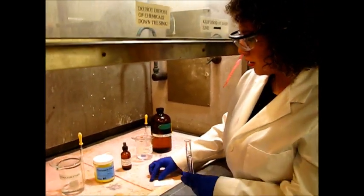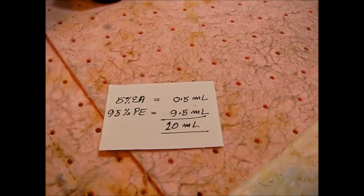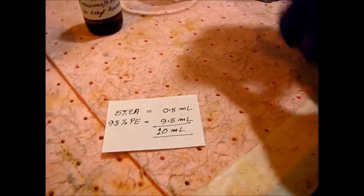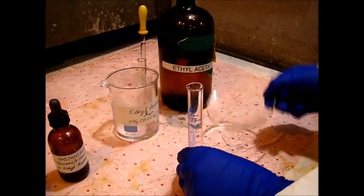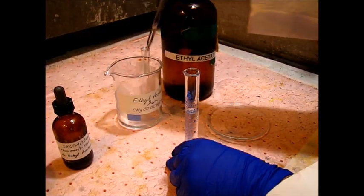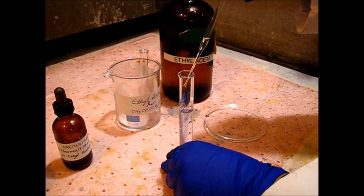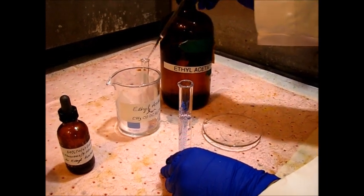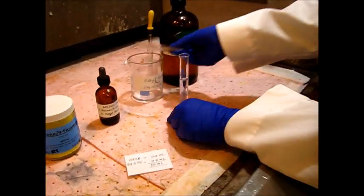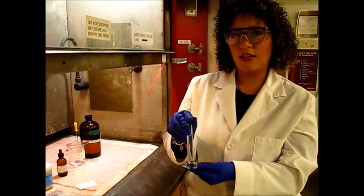For beaker 2 we have to make a 5% ethyl acetate concentration. I have already measured out 9.5 mLs of PE and we're going to top it off with 0.5 mLs of ethyl acetate. So we reached our 10 mLs. Here we have our 95% PE and 5% ethyl acetate.